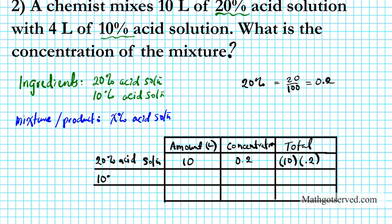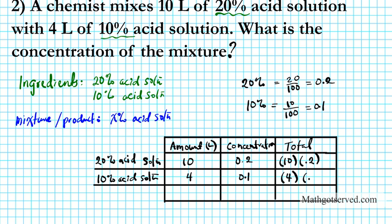The next ingredient is the 10% acid solution. The amount is 4 liters, and the concentration is 10% in decimal form, which is 10 over 100 — that's 0.1. So the concentration is 0.1, and the total is going to be the product of the amount and the concentration: 4 times 0.1. These two rows I just populated on the chart are the ingredients.